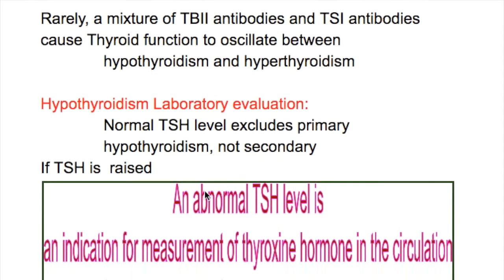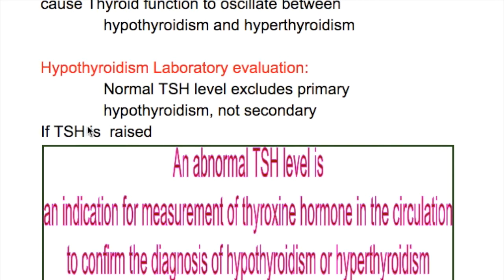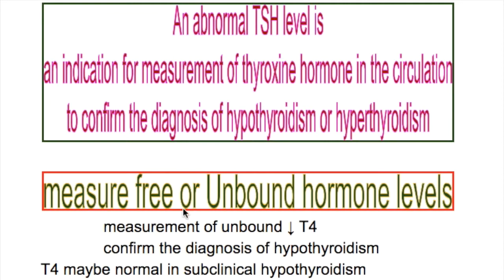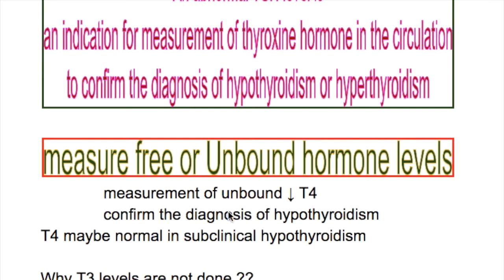Laboratory evaluation of autoimmune hypothyroidism: A normal TSH level excludes primary hypothyroidism but not secondary. If TSH is raised, measure unbound or free T4 level. Measurement of decreased unbound T4 confirms the diagnosis of hypothyroidism, but T4 may be normal in subclinical hypothyroidism.